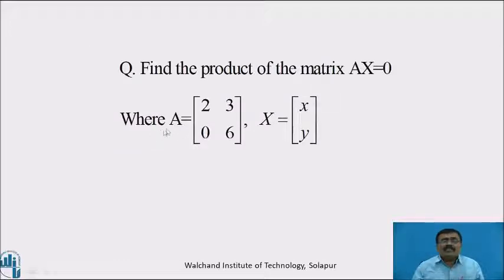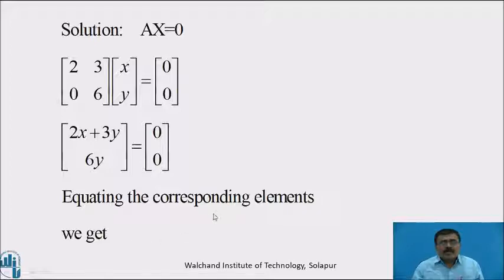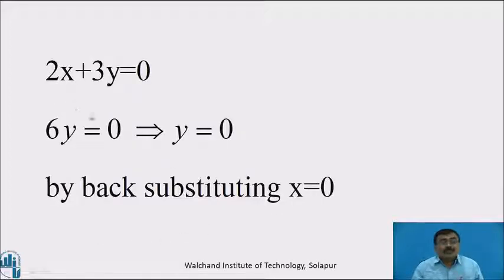Find the product of the matrix AX = 0, where A = [[2, 3], [0, 6]] and X = [X, Y]. Taking the product: 2X + 3Y = 0 and 6Y = 0. Equating corresponding elements: 6Y = 0 implies Y = 0, and by back substitution X = 0.